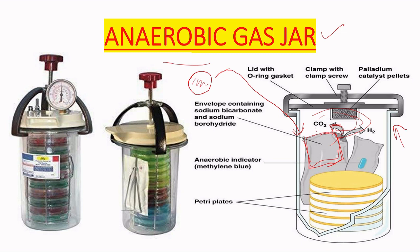To determine whether the anaerobic condition has been created in the gas jar, we add an indicator — methylene blue. Normally, methylene blue is blue in the presence of oxygen. When CO2 is produced and anaerobic conditions are established, it converts from blue color to pink color, indicating an anaerobic condition.